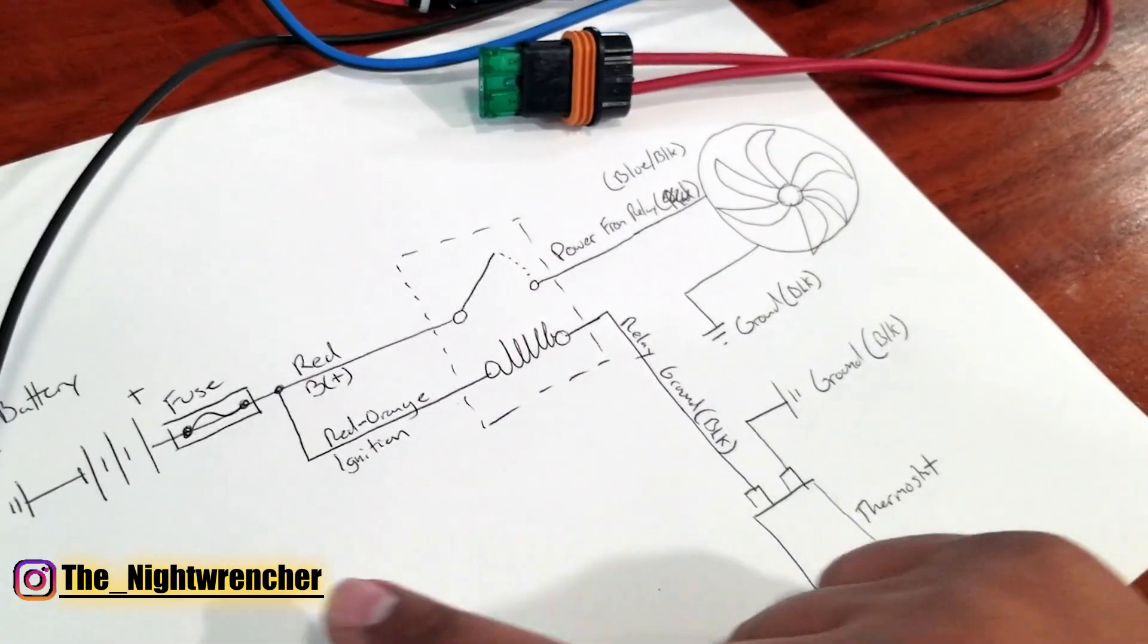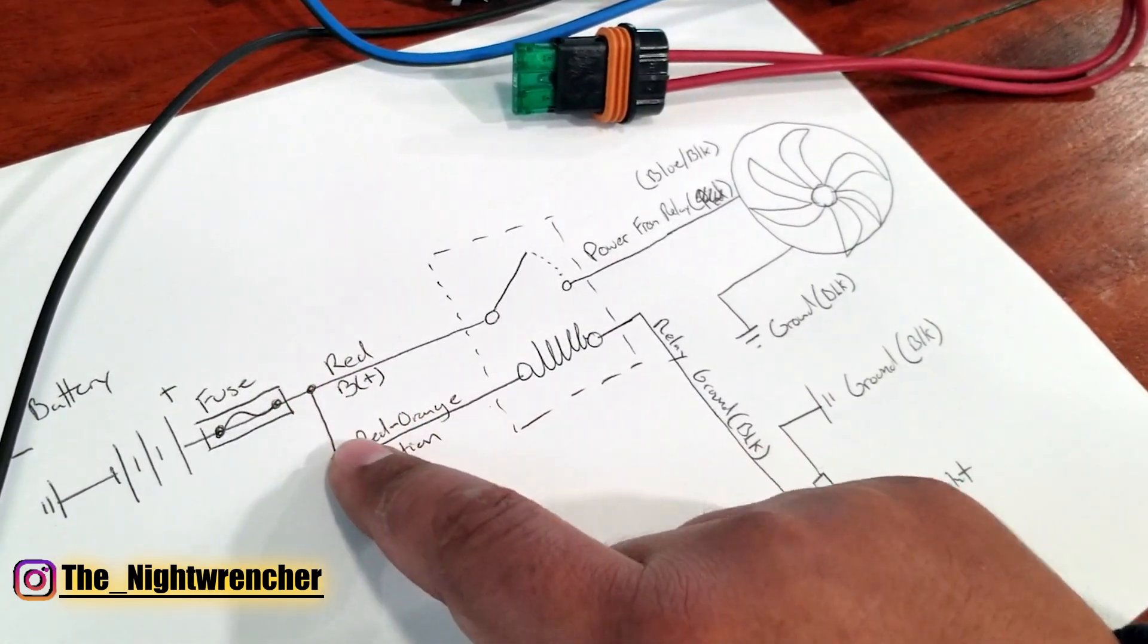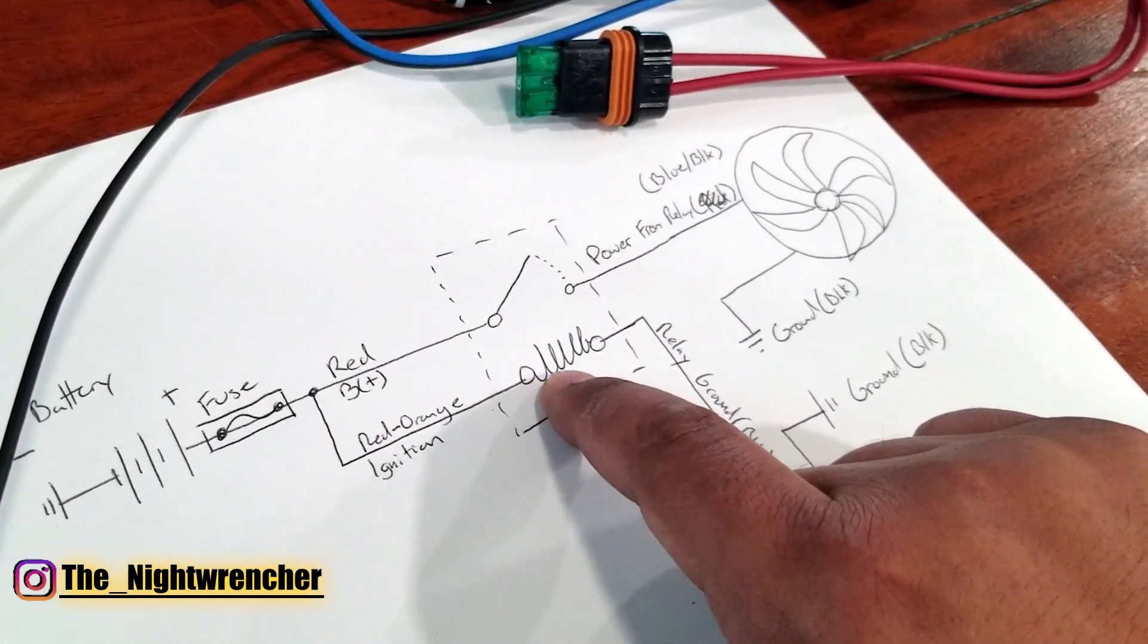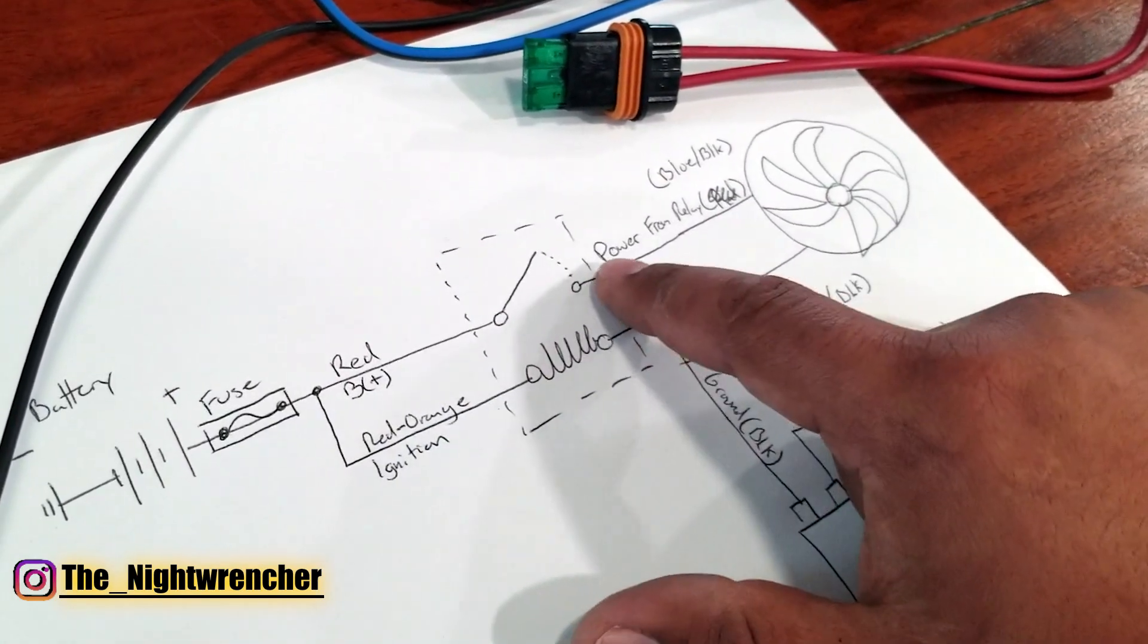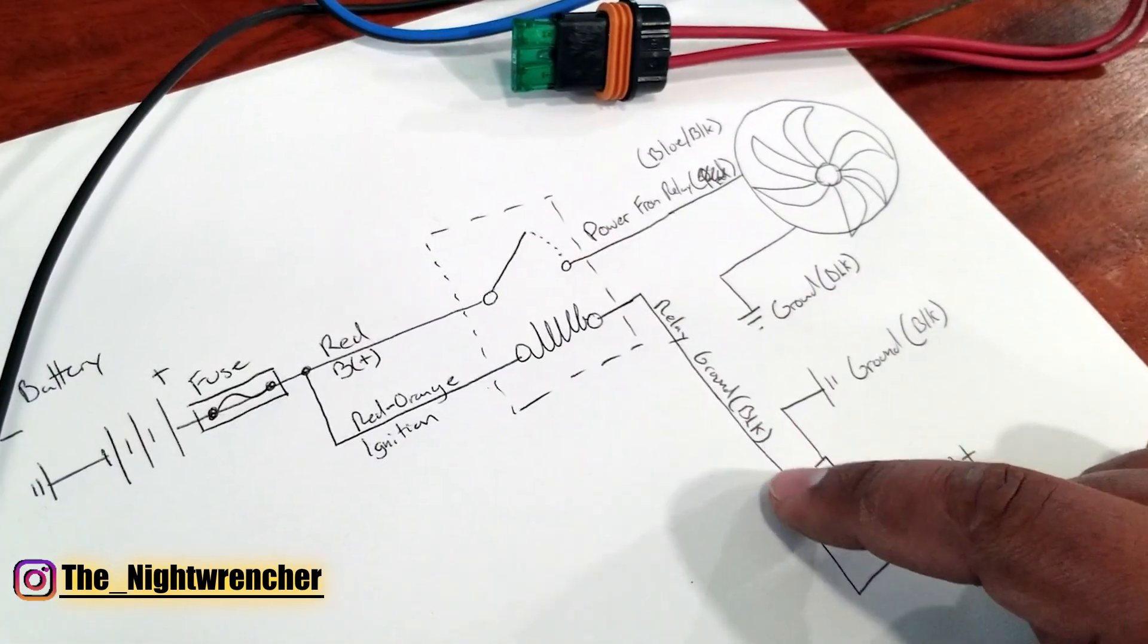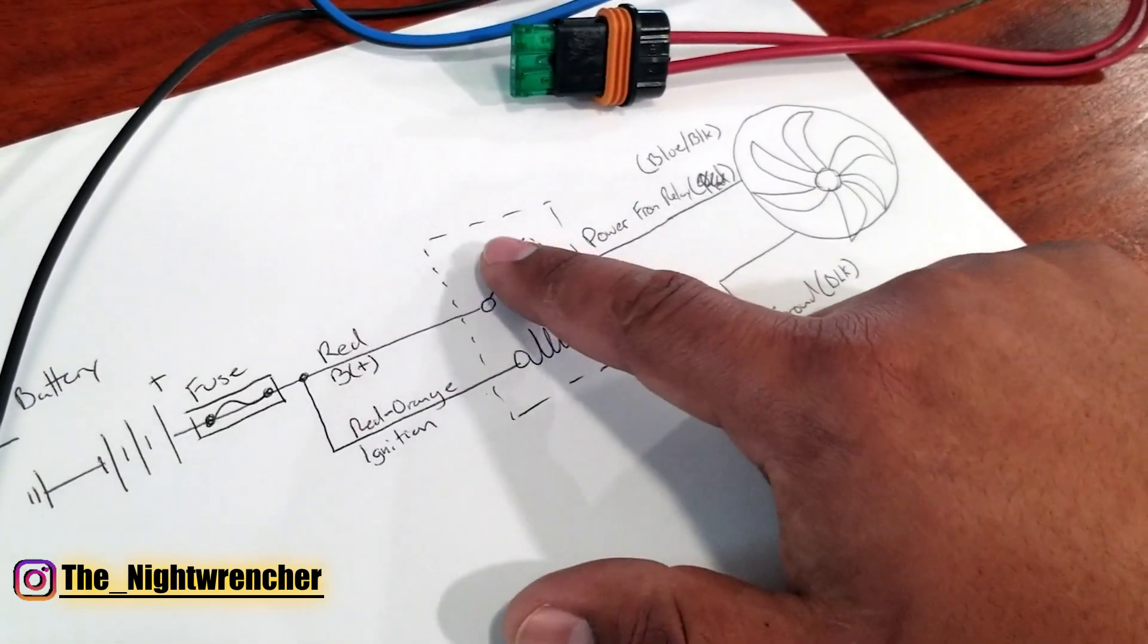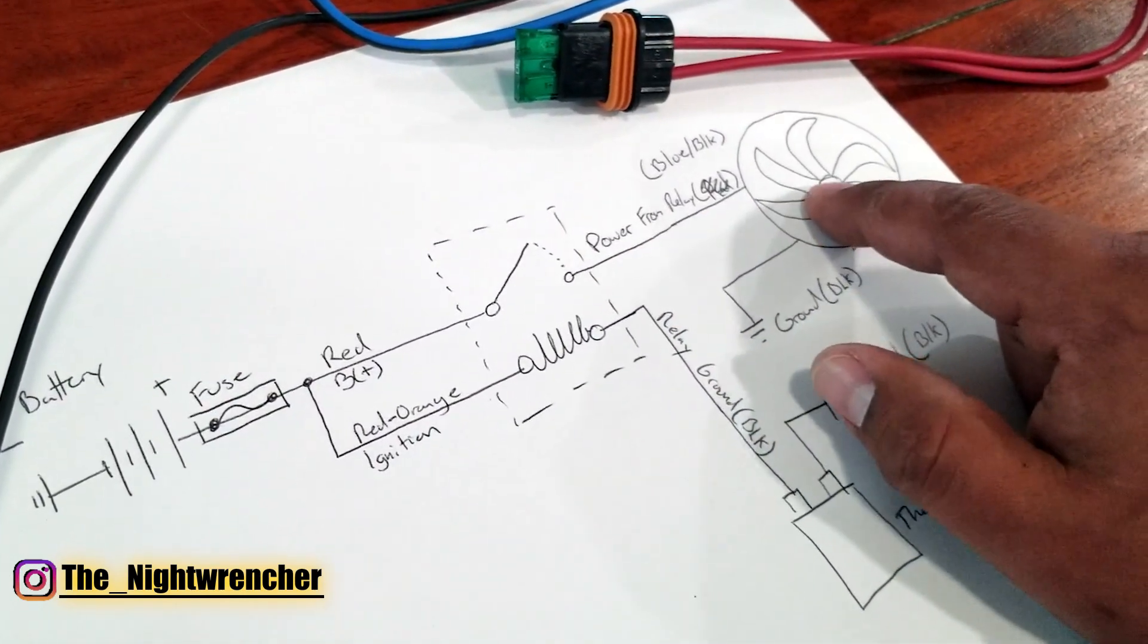The way we have it set up here is that your red orange and red come from the same fuse source. You have power to the relay all the time. You have power to the relay switch all the time. You don't have power to the fan until this closes. Once the ground side is triggered by the thermostat, the relay will then close. Power will be sent to the fan and then your fan will turn on.